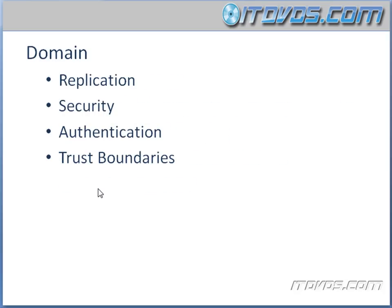Now let's talk about domains. Why would we want to create multiple domains? That's a completely individualized design decision. Your company may be large and have only one domain. But sometimes if we have a large company in multiple locations, we may want to break that up into multiple domains. One reason is replication — our Active Directory database has a domain directory partition replicated between all domain controllers in our domain. If we have slow WAN links between, say, New York and Phoenix, we may want two different domains so that a very large domain directory partition isn't replicated over that WAN link.